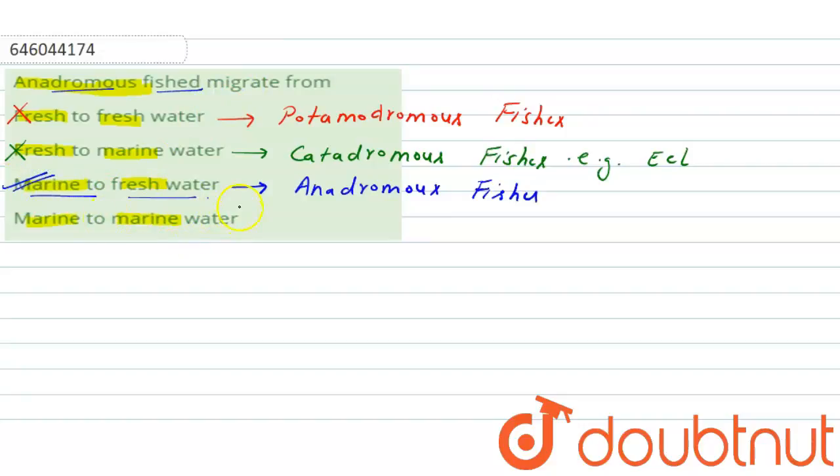And the last option, marine to marine water, is also incorrect because these fishes which migrate from marine to marine water are called Oceanodromus fishes. So that's why this option is also incorrect. The correct answer will be option number 3.